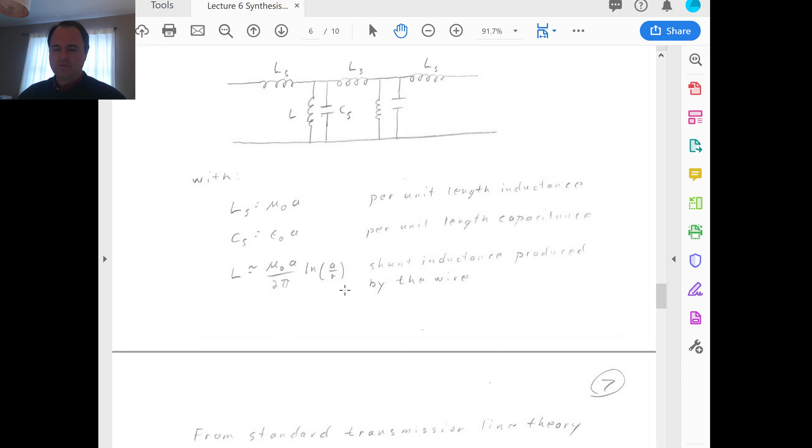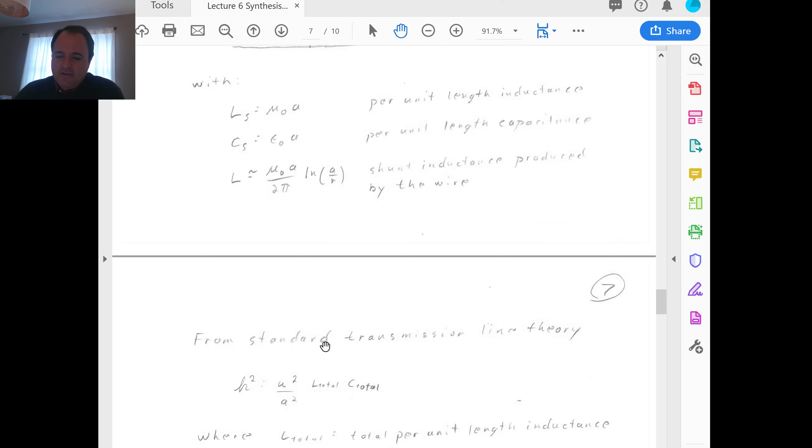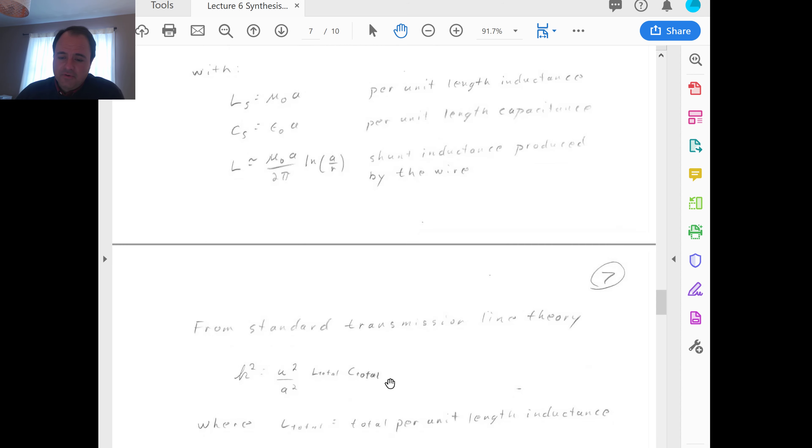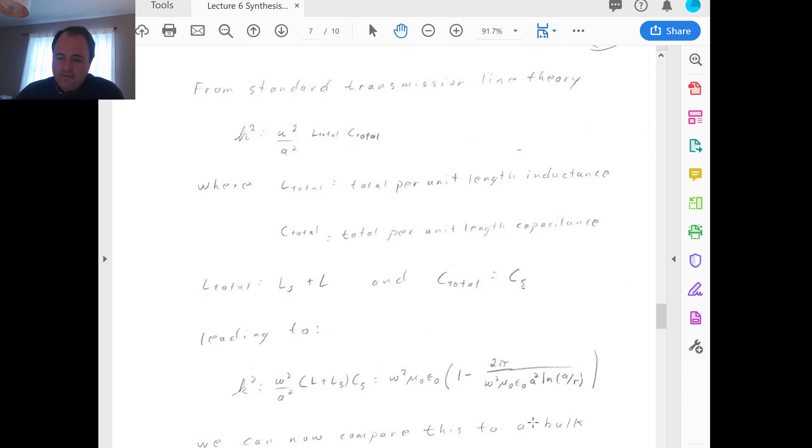But then other works do a more accurate derivation. And it turns out where the more accurate derivation is indeed quite a bit more accurate than this fairly crude approximation. But we'll go with this for the moment. Once you have L and C, you can use standard transmission line theory to equate that to K squared. So, then K squared is equal to omega squared. The scanner is not elected. That's not U. That's omega squared over A squared. L total, C total. And L total is going to be the combination of the series inductance. I mean the per unit length inductance, or the transmission line, plus L coming from the wires. And C total is just simply Cs.